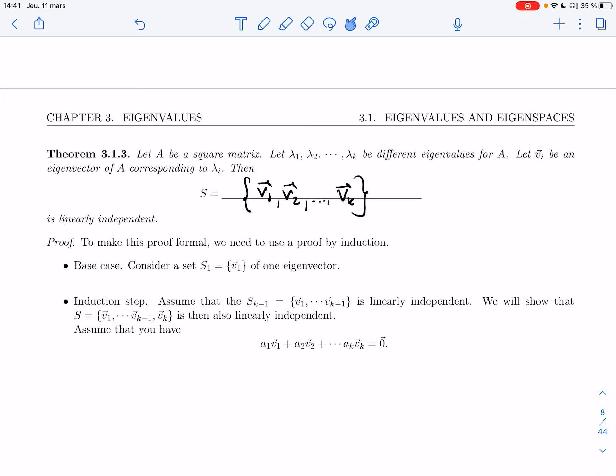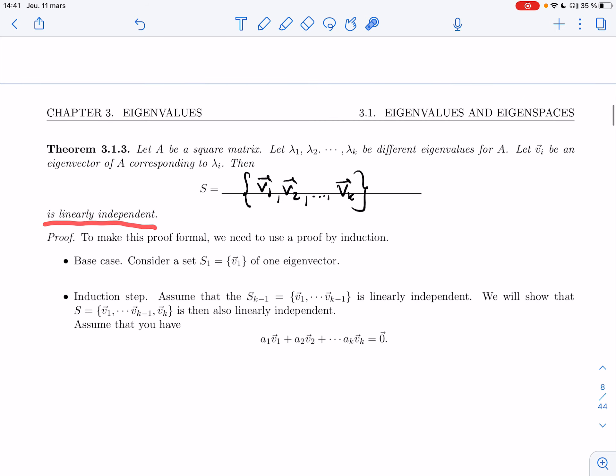that set will be linearly independent. So if you take eigenvectors of different eigenvalues and place them together, you're going to get something that's linearly independent.